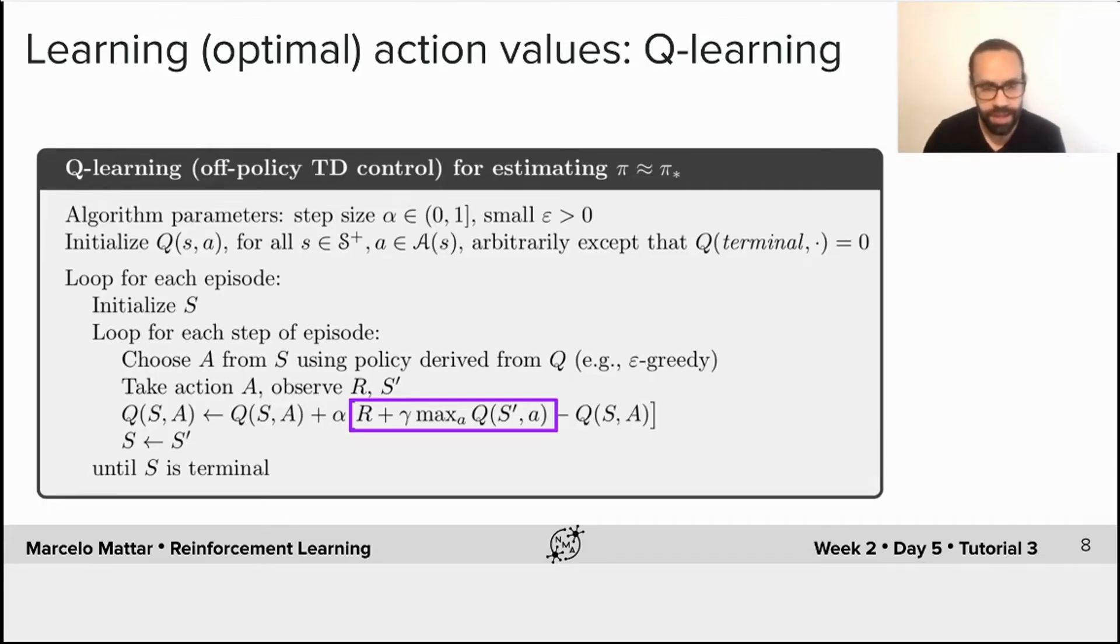So the agent then executes whatever action it chooses, and then the environment responds with S prime and R, and then the agent observes that resulting reward and state. Once the agent observes that resulting reward and state, it can then update its estimate of the value of the action that was taken.